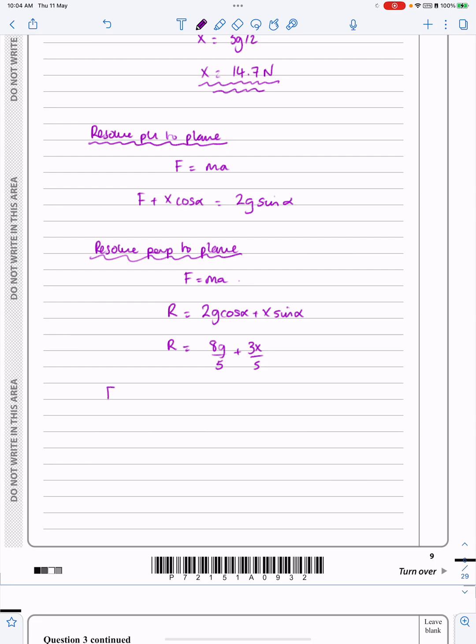If I do F equals mu R now, F is just equal to 0.5 times by this thing. So F is going to be equal to—if I want to just tidy this all up, this is just going to help me out with my algebra in a bit—I'm going to call that 8g plus 3X all over 10. So I've got F equals mu R there, which gives me F equals that.